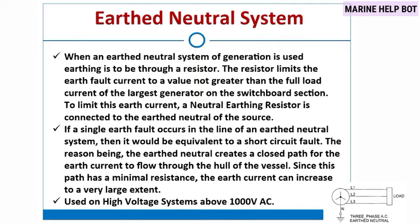In our insulated neutral system there was no resistor — it was directly insulated — but in the earth neutral system we use a resistor. If a single earth fault occurs in the line of an earth neutral system, it would be equivalent to a short circuit fault. The reason is that the earth neutral creates a closed path for the earth current to flow through the hull of the vessel. Since this path has minimal resistance, the earth current can increase to a very large extent. This system is used on high voltage systems above 1000 volts.